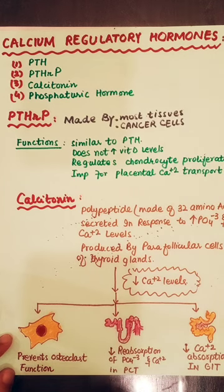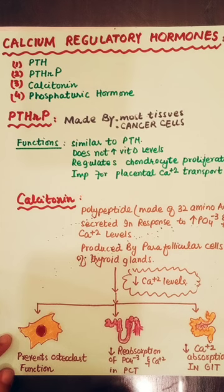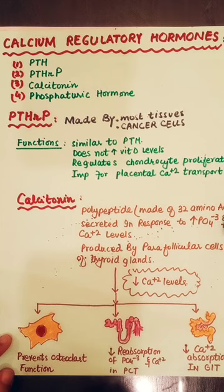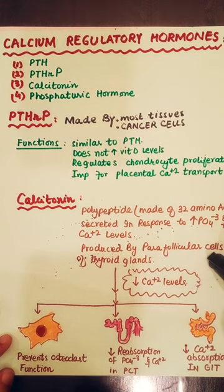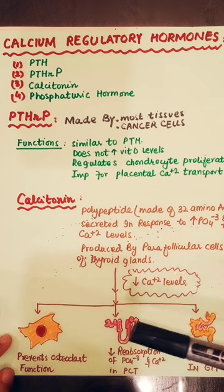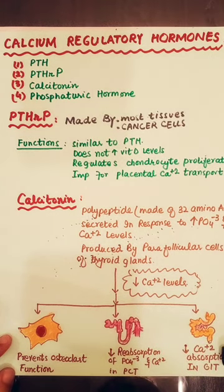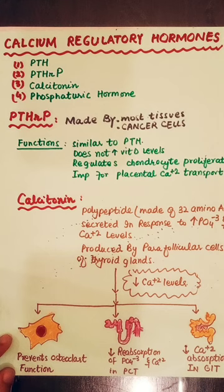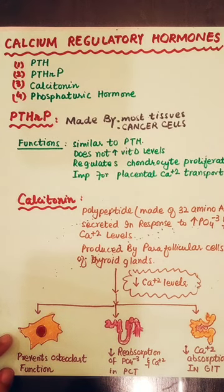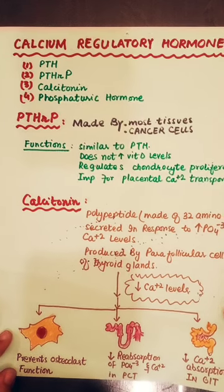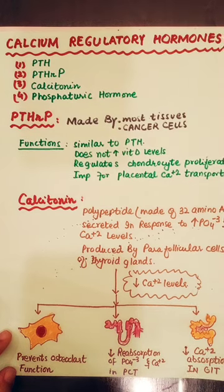The next hormone is calcitonin. Calcitonin is a polypeptide made up of 32 amino acids — important for MCQs. When calcium and phosphate levels are increased, calcitonin is released. The parathyroid glands are four in number and are located on the posterior surface of the thyroid gland. Calcitonin maintains calcium levels by preventing osteoclast function, decreasing resorption of phosphate and calcium in the proximal convoluted tubule, and decreasing calcium absorption from the GIT. Importantly, calcitonin and parathyroid hormones have opposite effects: parathyroid hormone enhances absorption while calcitonin inhibits it.